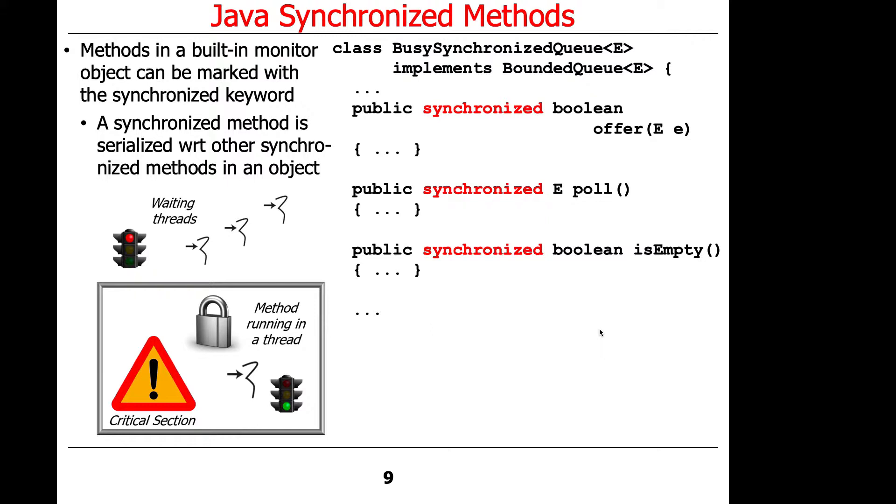So remember that synchronized methods always refer to instances or objects as instances of a class. So what it says is that only one of these methods at a time can be running inside an object in the context of a thread.